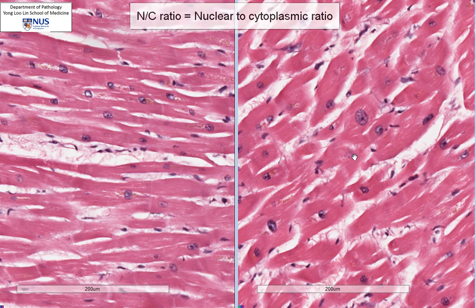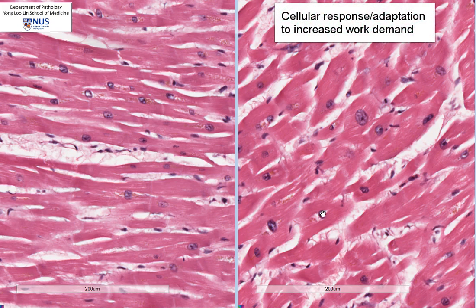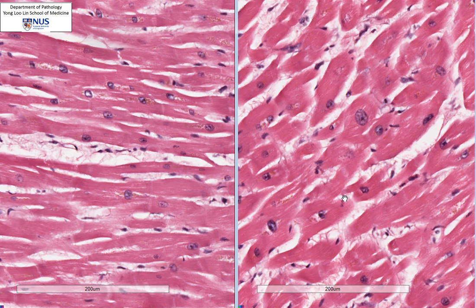The larger cell size reflects an increase in synthesis of the structural components of cells. This is often a cellular response to increased work demand. For example, if this occurs in the left ventricle, which is the most common site, it could be due to increased workload from pressure overload in a patient with hypertension, or in a patient with aortic valve stenosis, where the left ventricle has to pump against increased resistance.